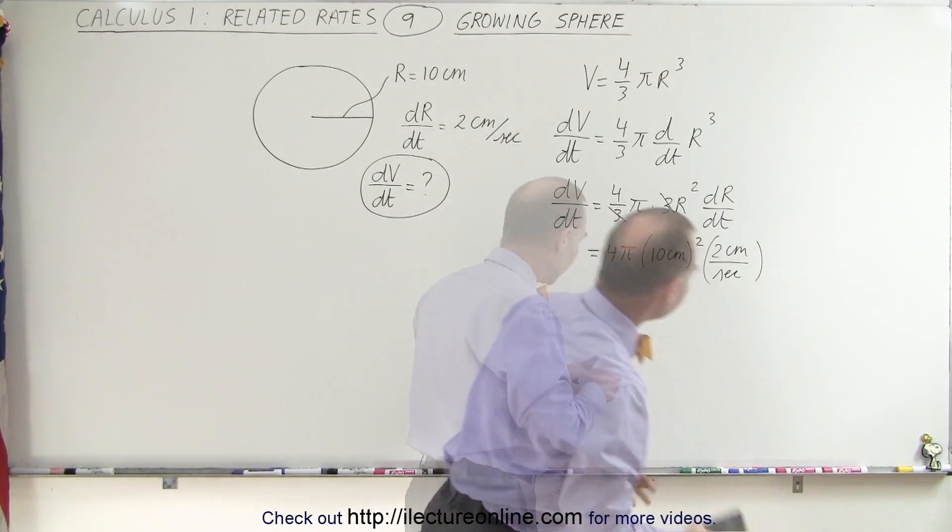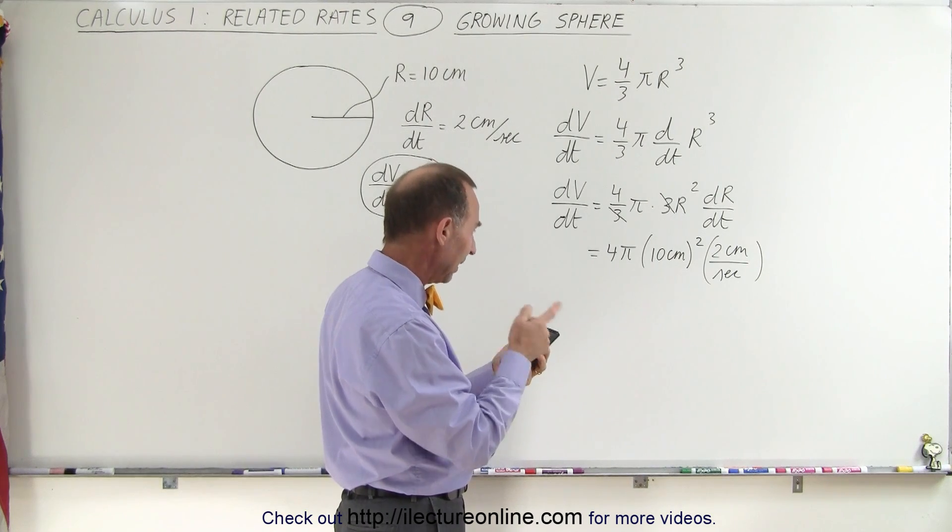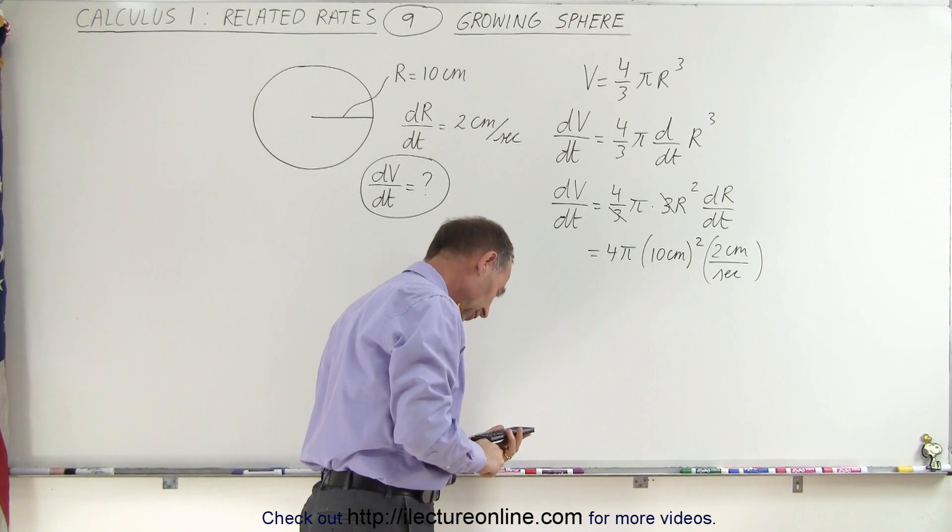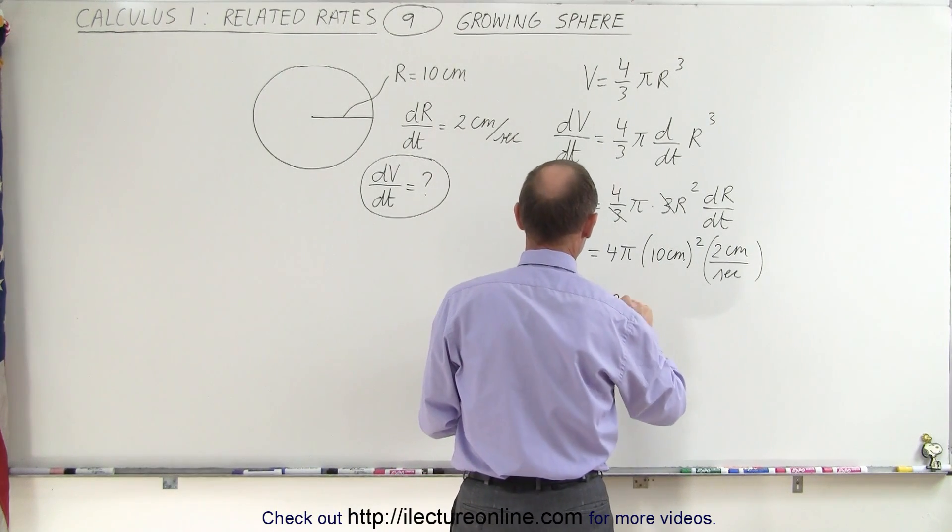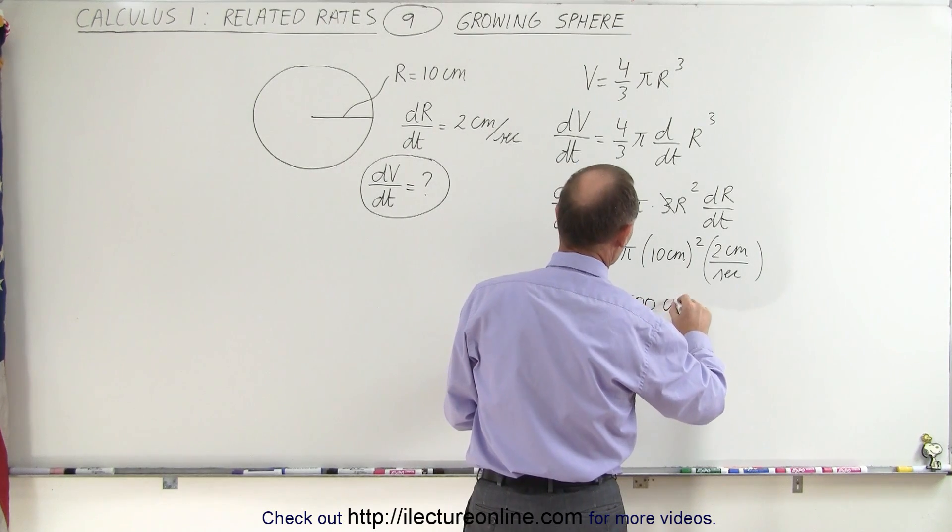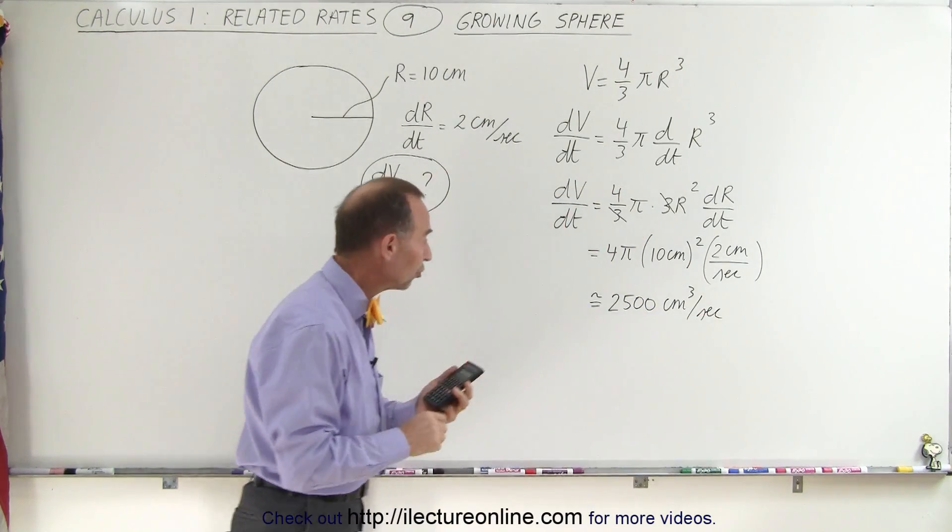Then we need a calculator, so we get 100 times 4 times pi times 2, and that gives us, where's that decimal place? There it is. So that's equal to approximately 2,500 cubic centimeters per second.